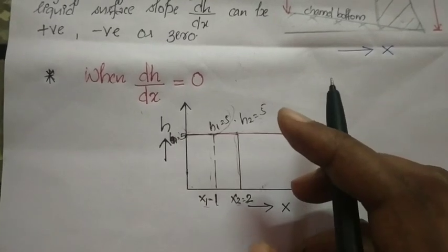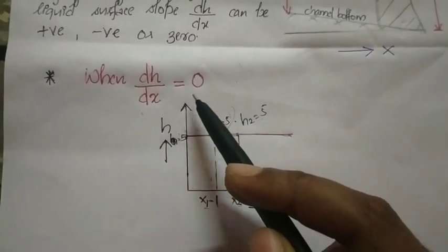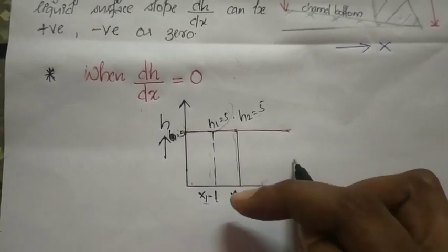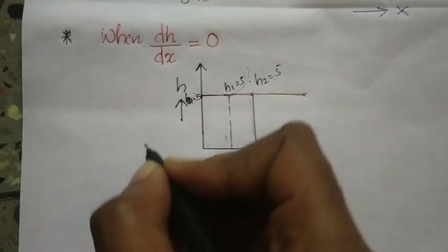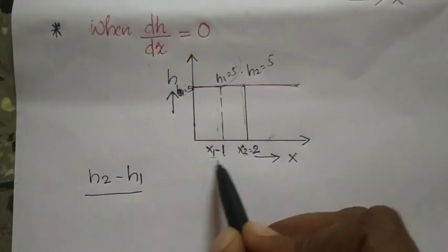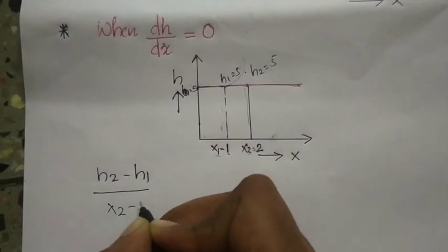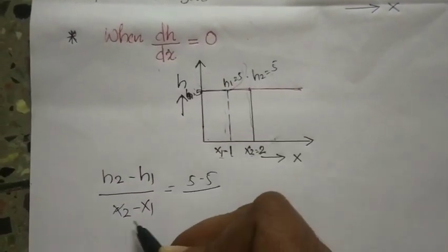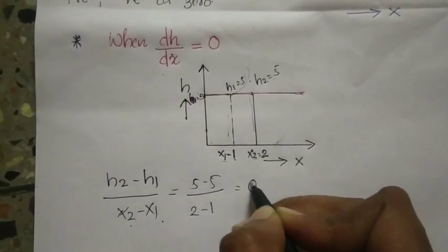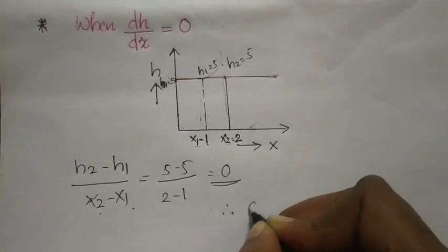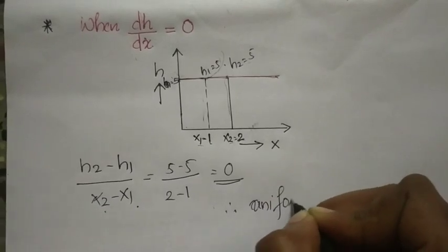When dh/dx equals zero, it is uniform flow. The free water surface is parallel to the channel bed. For example, h2 minus h1 by x2 minus x1 equals 5 minus 5 by 2 minus 1, which equals zero. Therefore, dh/dx equals zero and the flow is uniform.